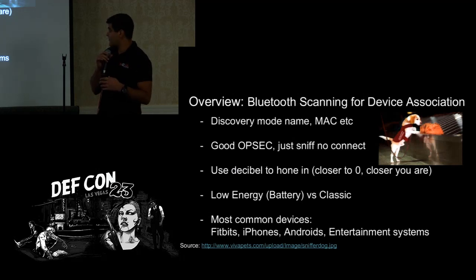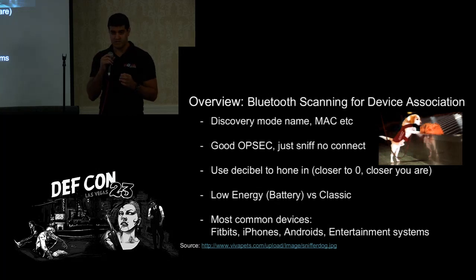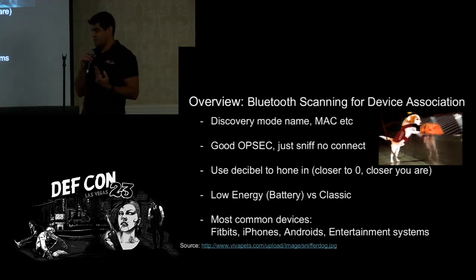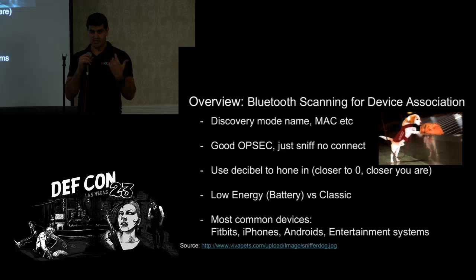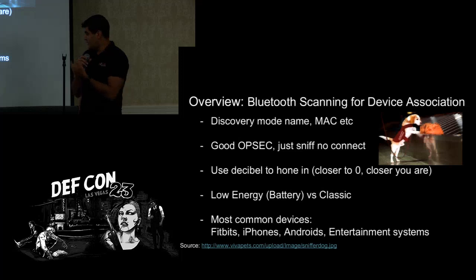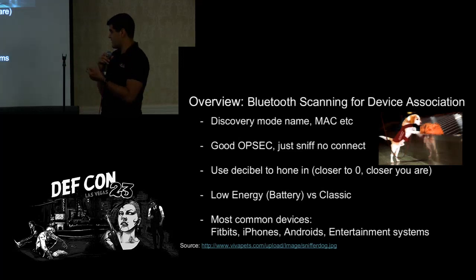For Bluetooth discovery mode, you can get MAC addresses and several different things. Good OPSEC is when doing these attacks we're not going to actually connect — we're just going to sniff. You can use the decibel levels to home in on someone; the closer to zero, the closer you are to the person. There are two types: low energy, for things like alarm systems or fire extinguishers with Bluetooth, and classic, which is normally what's in your phone. I've been doing this for several months and I see a lot of Fitbits, iPhones, Androids, and entertainment systems.